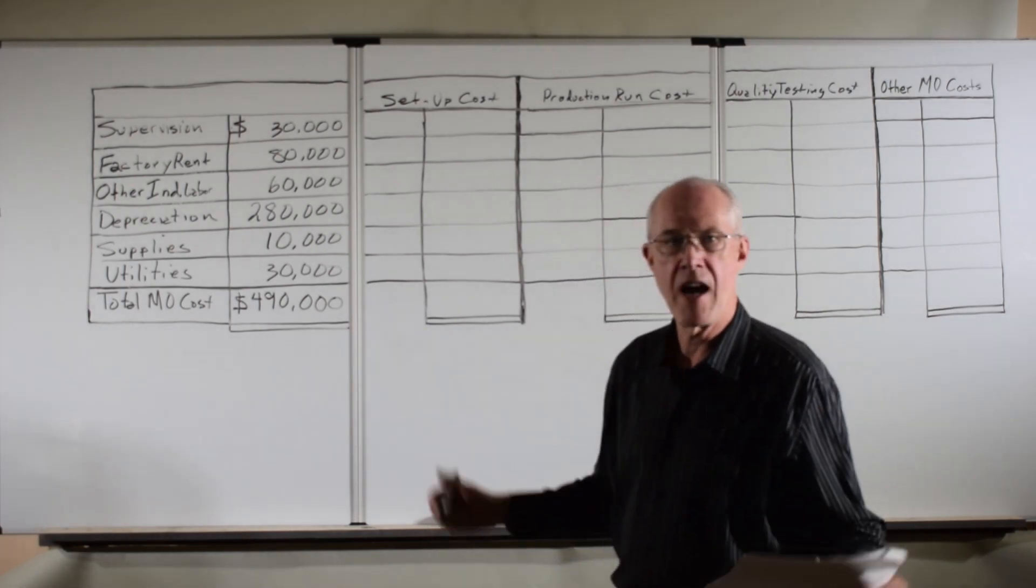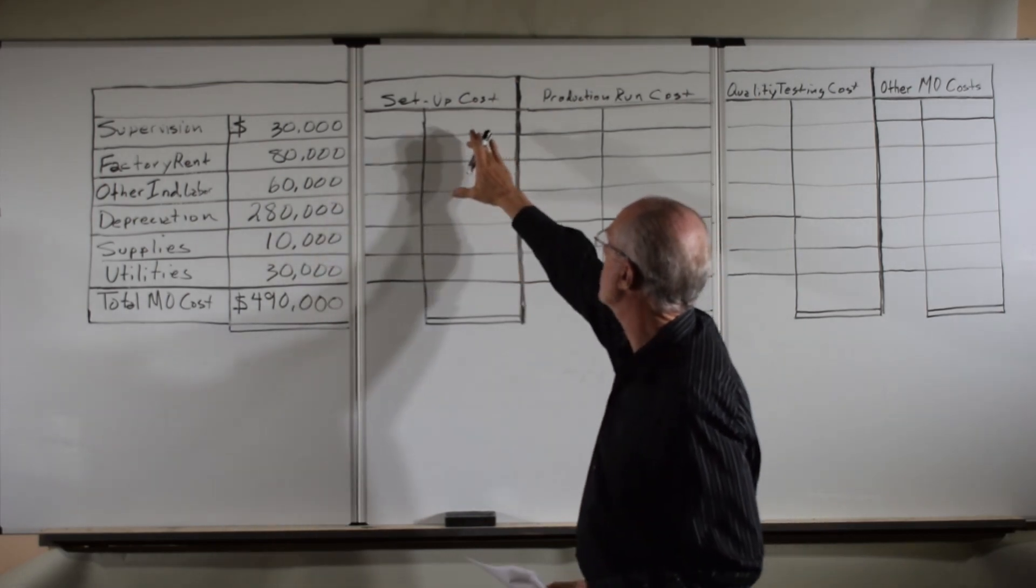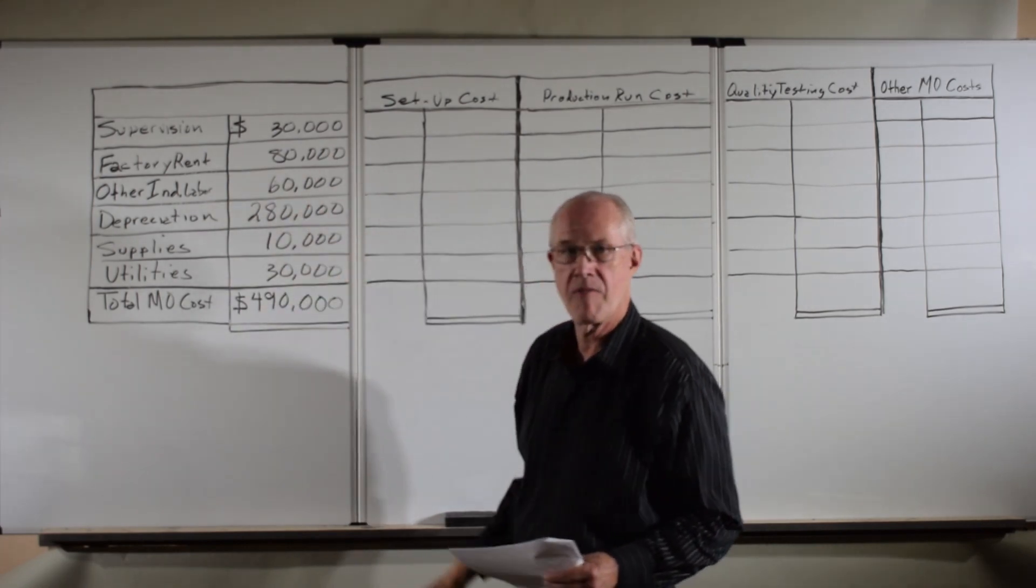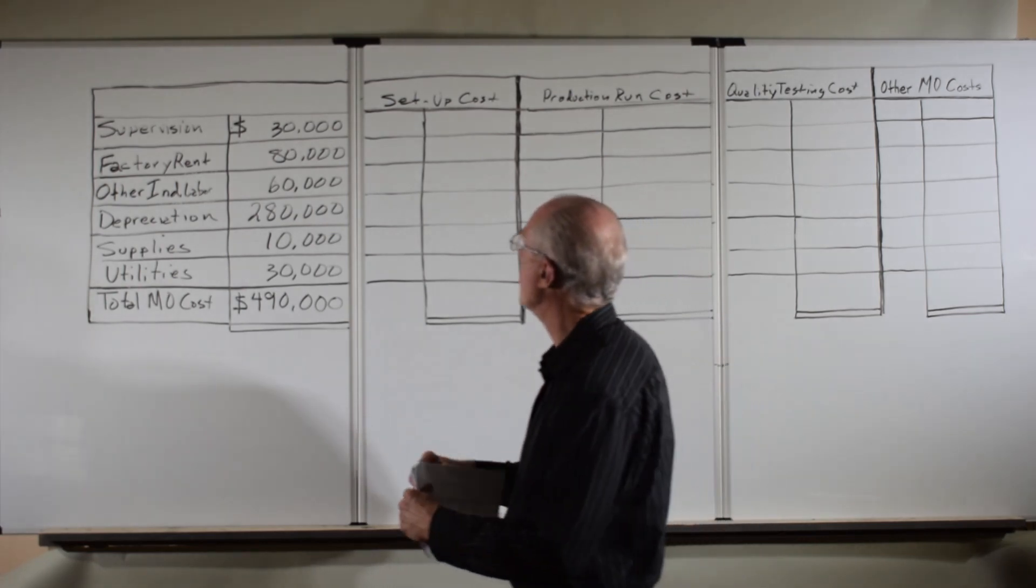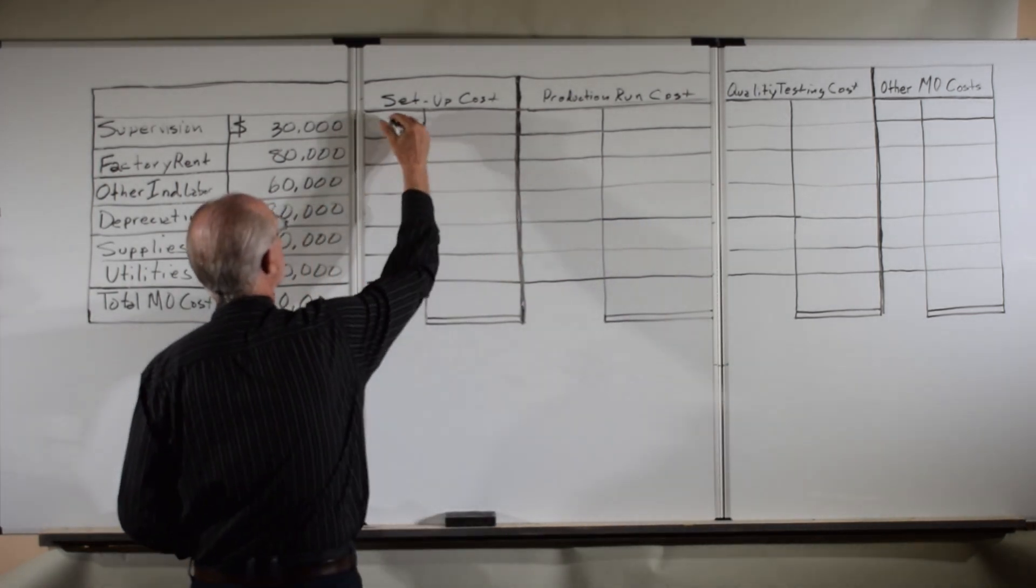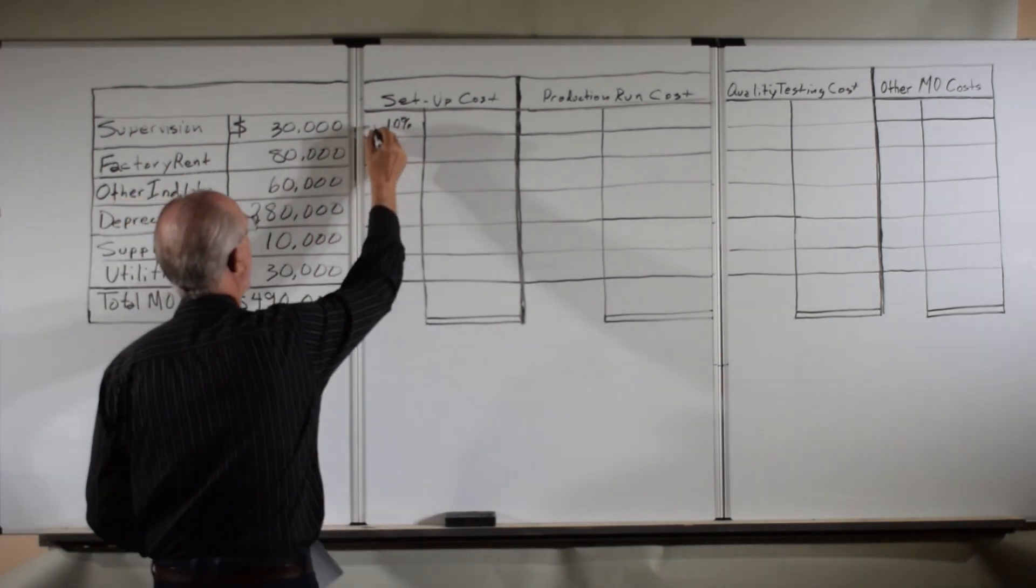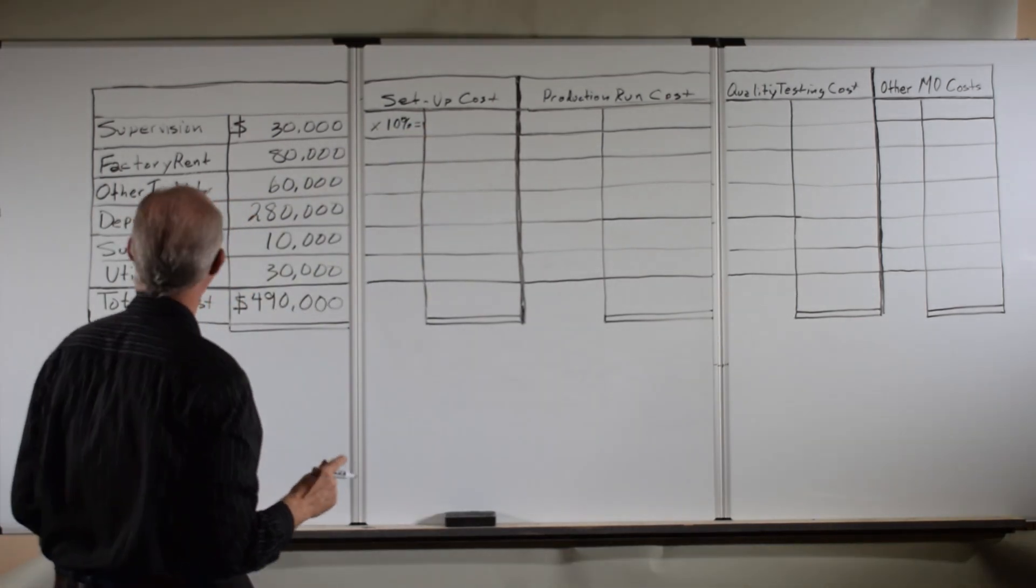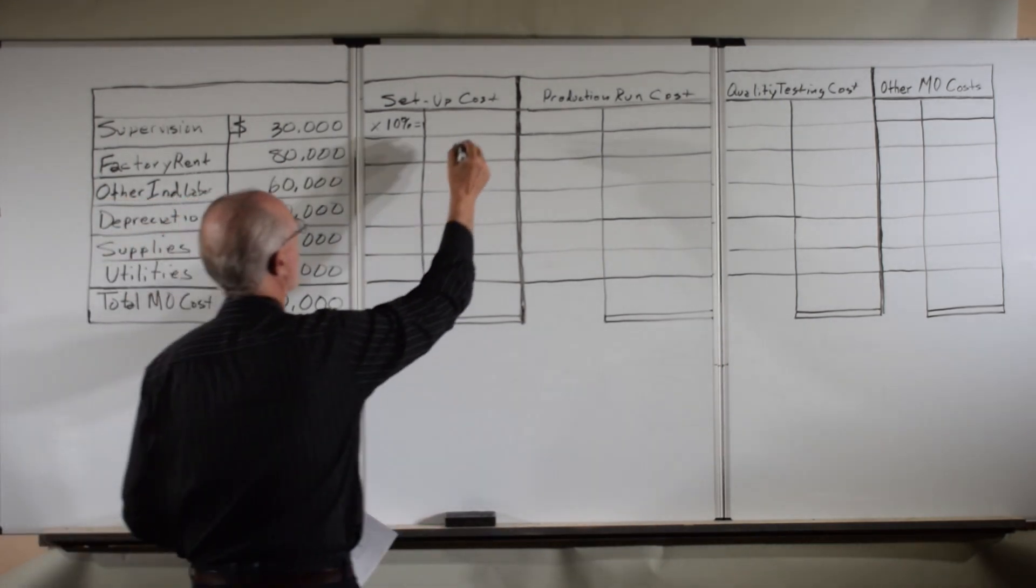The next thing I want to do is enter some estimates. I'm going to assume that we have contacted folks in the factory, had meetings with engineers, accountants, supervisors, and workers. We've come up with some percentages of how much setup is using of these various aspects of manufacturing overhead.